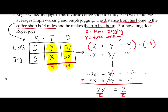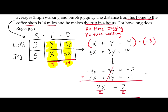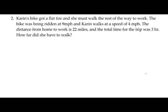In Problem 1 we were looking for an amount of time — he jogs for 1 hour. We didn't need to solve for y because the question was answered. Now let's look at Problem 2, which we'll solve exactly the same way. Karen's bike got a flat tire and she must walk the rest of the way to work. The bike was being ridden at 9 miles per hour — that's a rate — and Karen walks at a speed of 4 miles per hour.